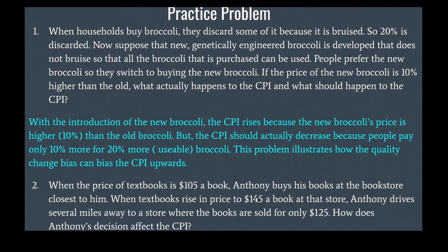Practice problem. When households buy broccoli, they discard some of it because it is bruised — 20% is discarded. Now suppose that a new genetically engineered broccoli is developed that does not bruise, so that all the broccoli purchased can be used. People prefer the new broccoli and switch to buying it. If the price of the new broccoli is 10% higher than the old, what actually happens to the CPI and what should happen to the CPI?